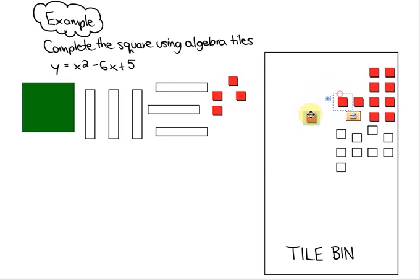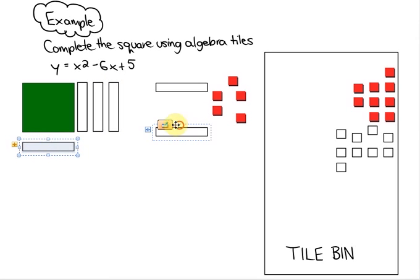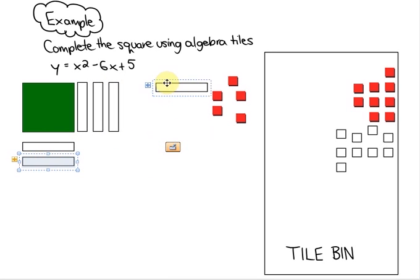Now what completing the square does is or what it's asking us to do is to create a square with the x squared tile and the variable tiles. So if I set it up something like this so that you can kind of identify what that is. Here is the beginnings of a completed square. This is x squared minus 6x.